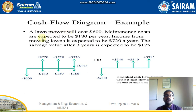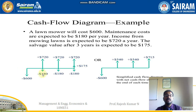Let's take another example. A lawnmower will cost 600 dollars. Maintenance costs are expected to be 180 dollars per year, and income from the mower is expected to be 720 dollars a year. The salvage value after 3 years is expected to be 175 dollars. You can see here: 600 is my investment, and every year I will be getting the benefit of 720 dollars for 3 years. The salvage, about 175 dollars, is the scrap amount after 3 years. Every year I will also be paying the maintenance charge of 180 dollars, and the final net value is shown after subtracting this.